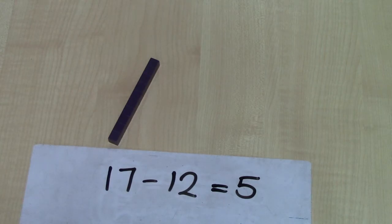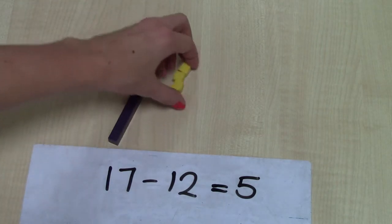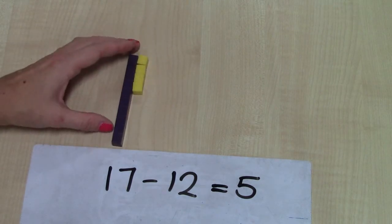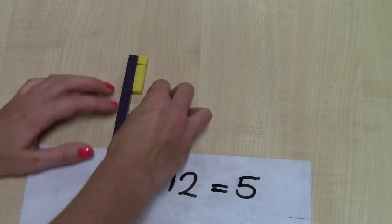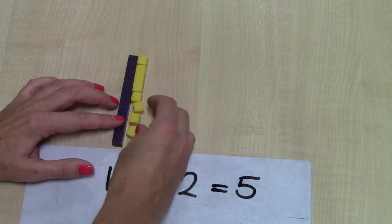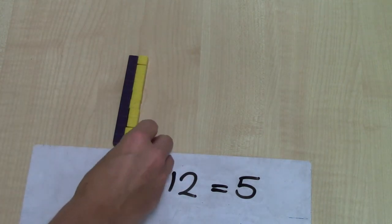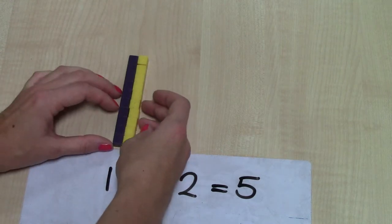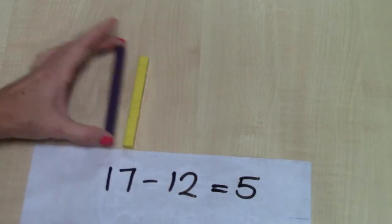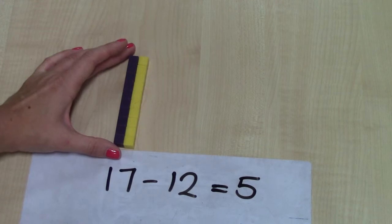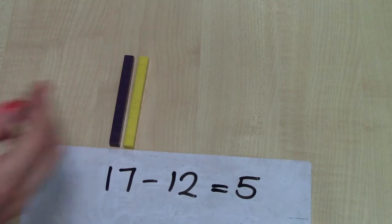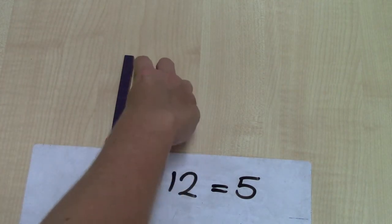So children might need a lot of practice using straws or using counting sticks to see that this one stick actually represents ten units. You can also show it here by placing alongside our ten ones and showing that they are actually the same. So it's very easy to make seventeen.